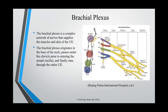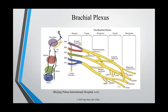Our brachial plexus originates from the base of our neck and goes underneath the clavicle, right before entering our armpit, or axilla. And then it travels through our entire upper extremity. From this picture, we're going to quickly talk about the different components of the brachial plexus.